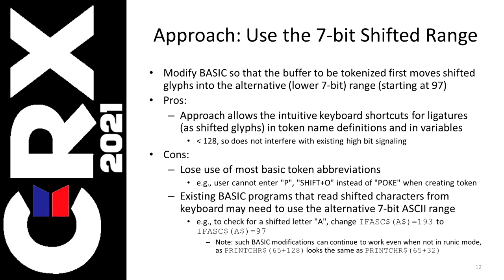So my approach is to use that lower range that doesn't have the highest bit set. The way I did this is I modified the BASIC ROM so that the buffer that holds all this stuff to be tokenized by BASIC first moves the shifted glyphs into that alternative lower range starting at 97, so they don't have that highest bit set. The pros are this allows me to have that intuitive keyboard shortcut I wanted for the ligatures. The cons are that in making these patches the way I did, I lose most of the use of BASIC token abbreviations. For those who don't know, if you're going to enter the word POKE, that would be the letter P and then you'd hit Shift-O instead of typing P-O-K-E. The abbreviations aren't actually stored — once tokenized, it's the token that's stored — just a faster way of entering code. I never really did it much back in the day, which is why I thought it was a great thing to sacrifice, but other people will probably not like that.